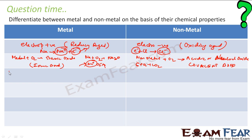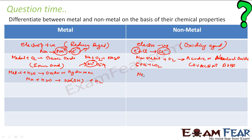Now let us talk about the reaction with water. If a metal reacts with water, you generally get an oxide or hydroxide. For example, sodium reacts with water to give sodium hydroxide. But non-metal plus water gives no reaction — there is no reaction of non-metals with water.